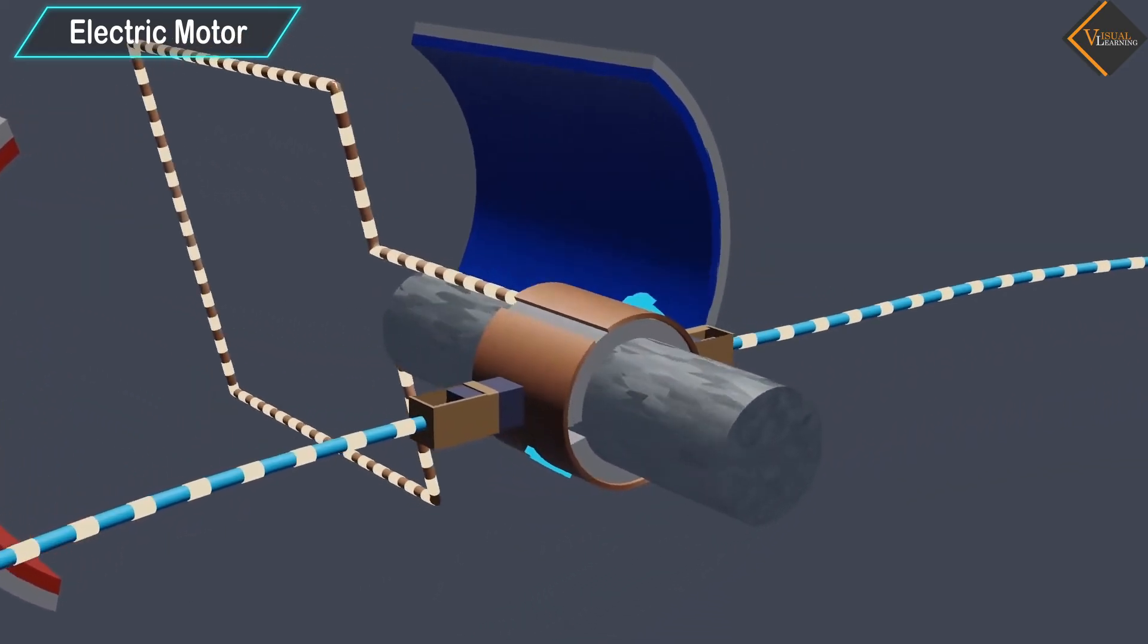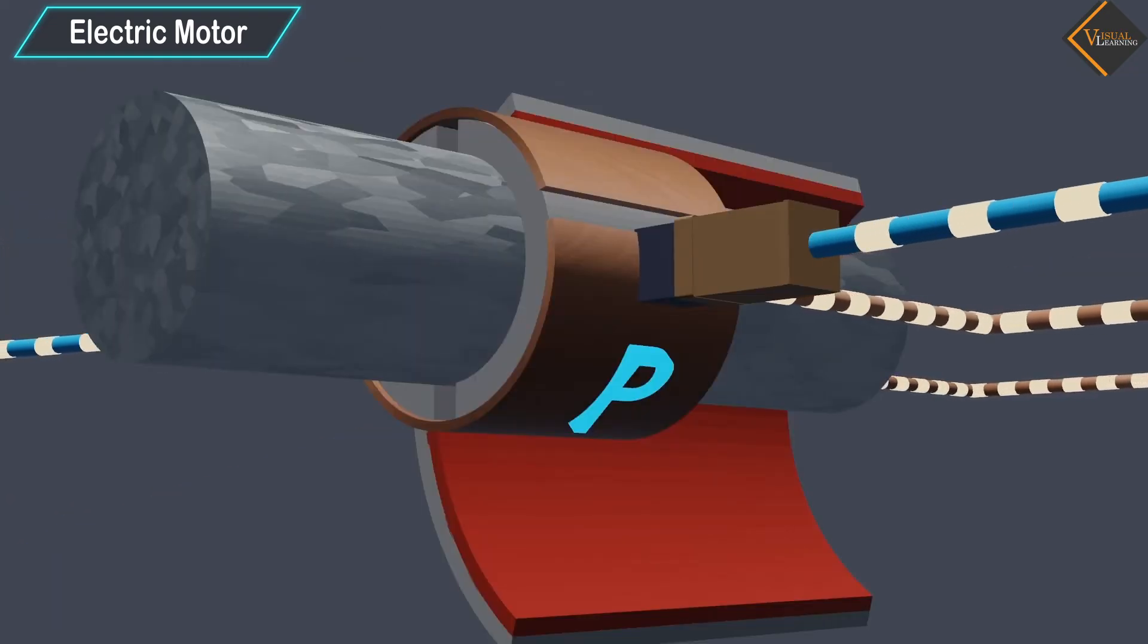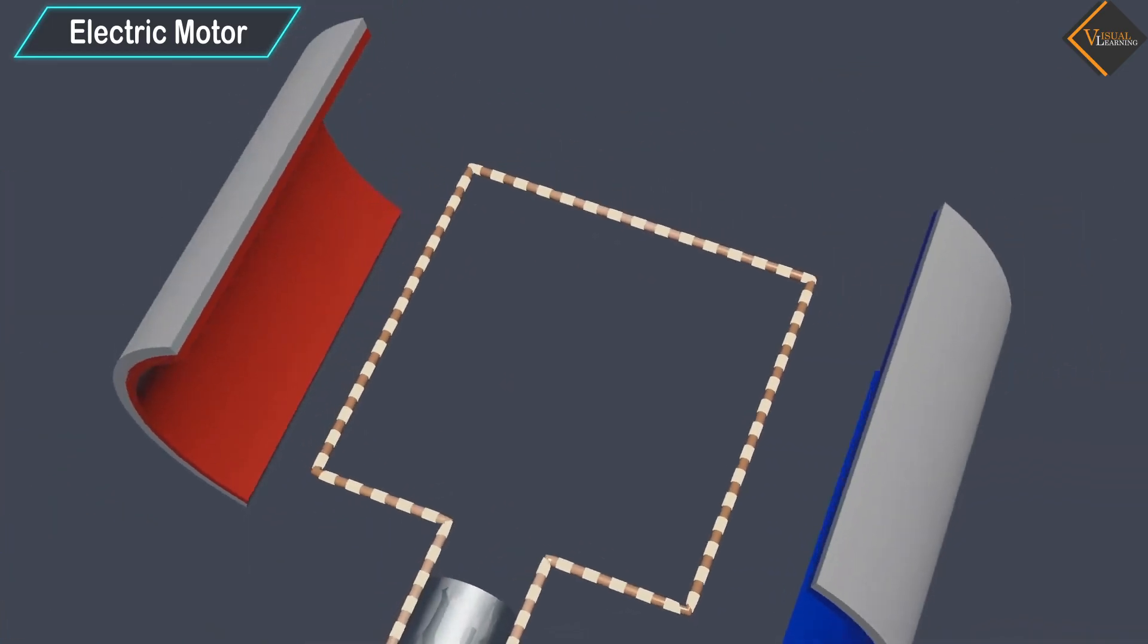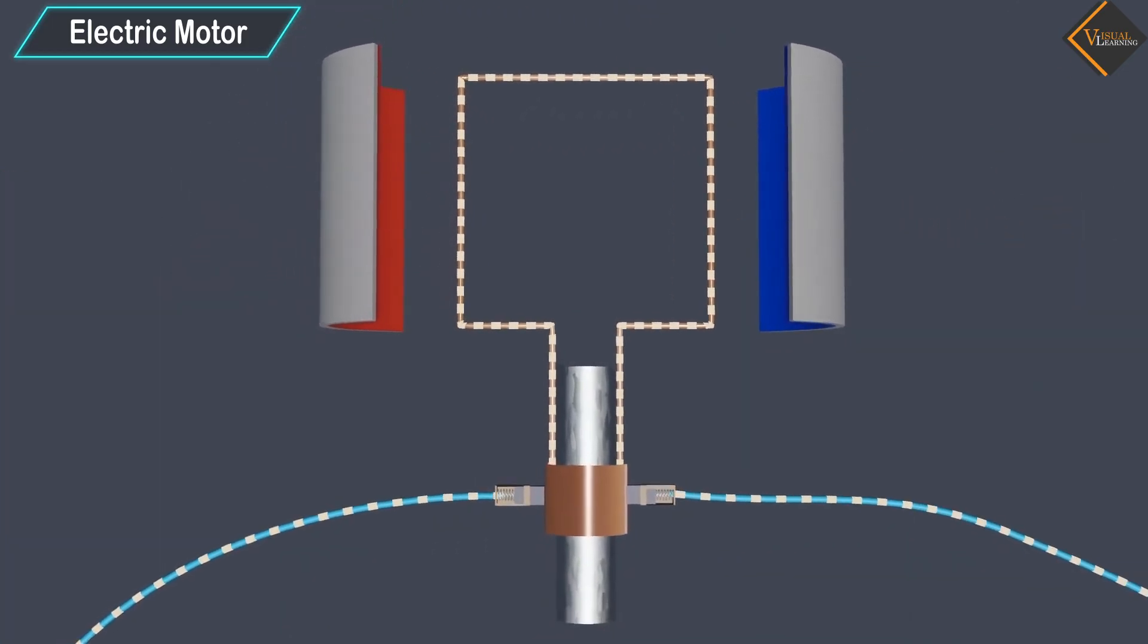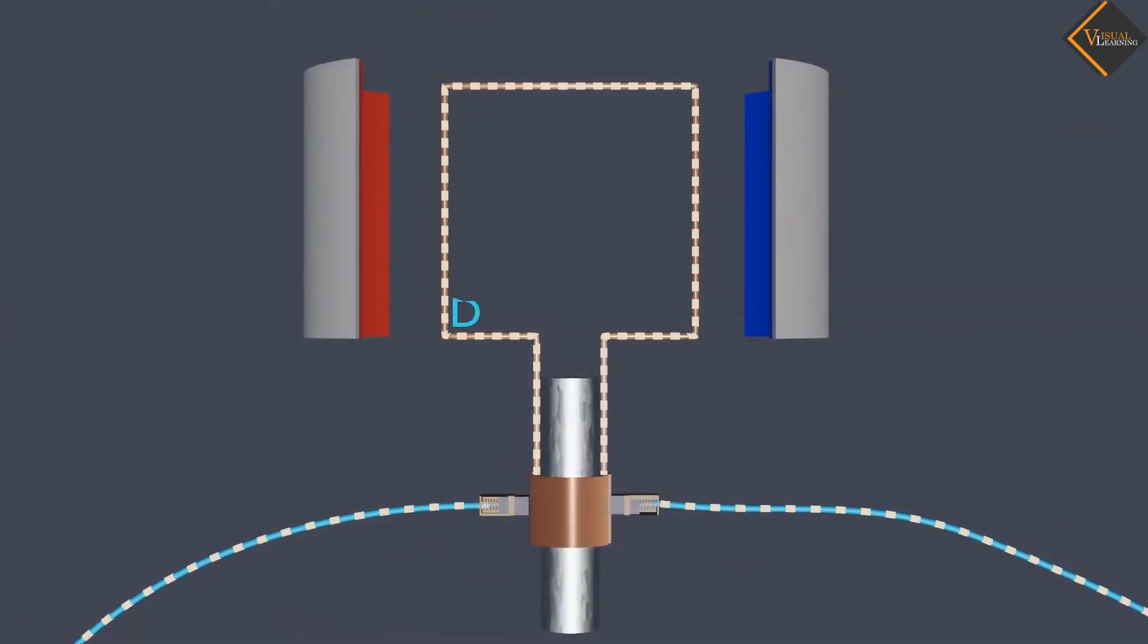At half rotation, Q makes contact with brush X and P makes contact with brush Y. In this scenario, the current in the coil gets reversed and flows along the path D, C, B, A.